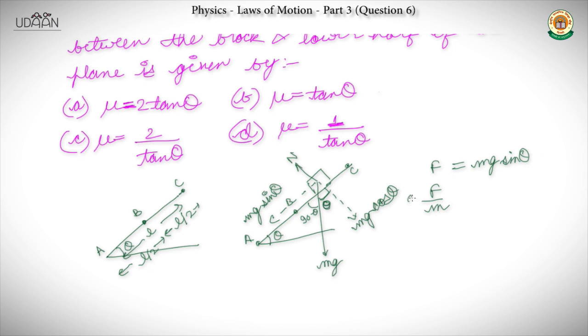For the first — the upper half of the plane — there is no friction. So the only force acting will be Mg·sin θ. Since that is the only force acting on the block, we divide by mass to get acceleration = g·sin θ.